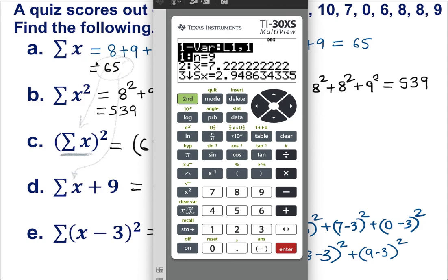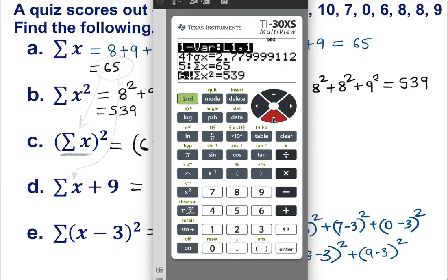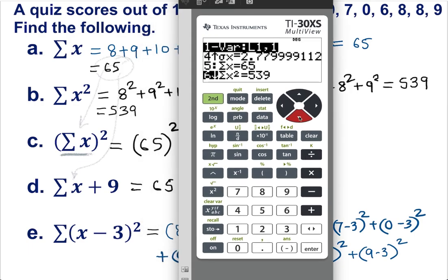One variable, calculate—bingo, done. We are interested in sum of X. Is there any sum of X? Let's take a look, scroll down a little bit. Sum of X is 65. Fantastic, we've got 65, so that's correct. Sum of X squared is 539. That's lovely, 539, so we've got it right.